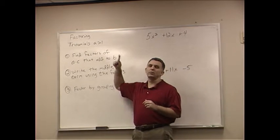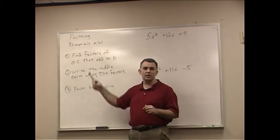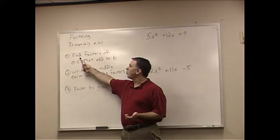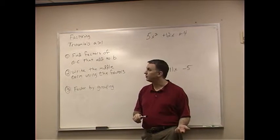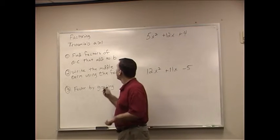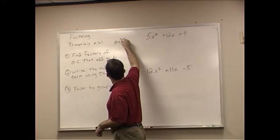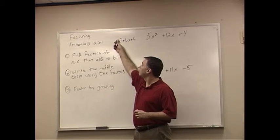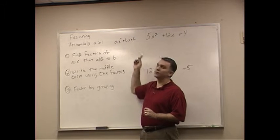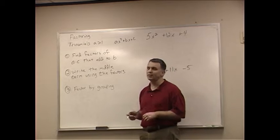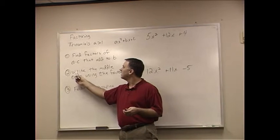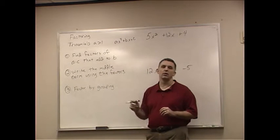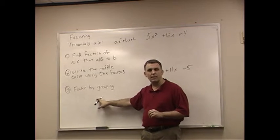So factoring where trinomials are A greater than 1. I don't have it listed here, but you've tried common factoring, and A is still greater than 1. Step 1 is you're going to find factors of A times C that add up to be B. Remember our general form, AX squared plus BX plus C. A is the number in front of the X squared, and C is the last number. The second thing we're going to do is write the middle term using the factors that we got here in step 1. And then we're going to factor by grouping.